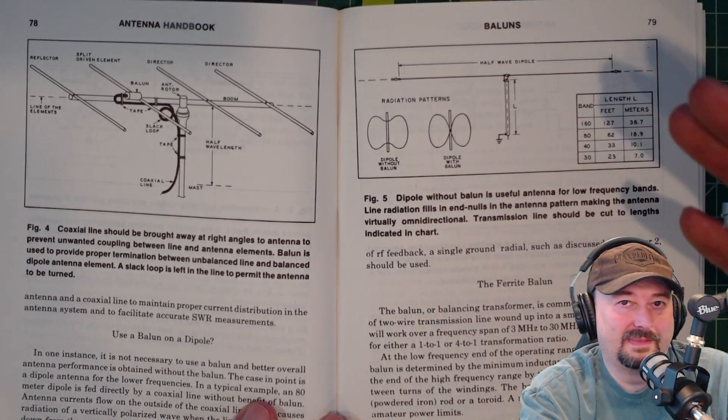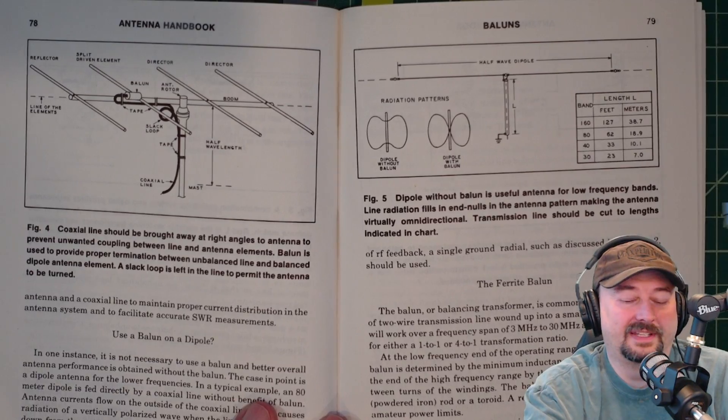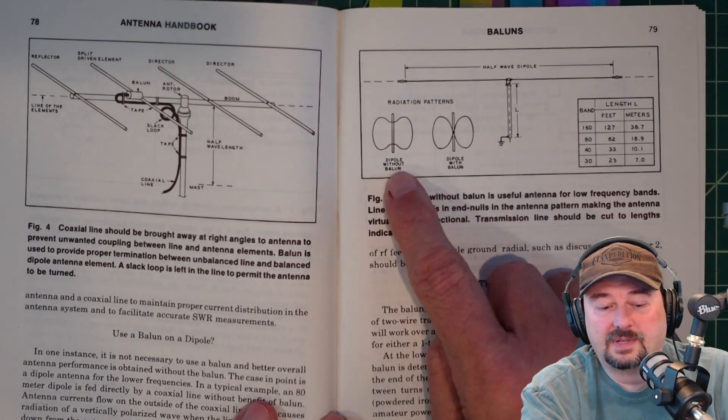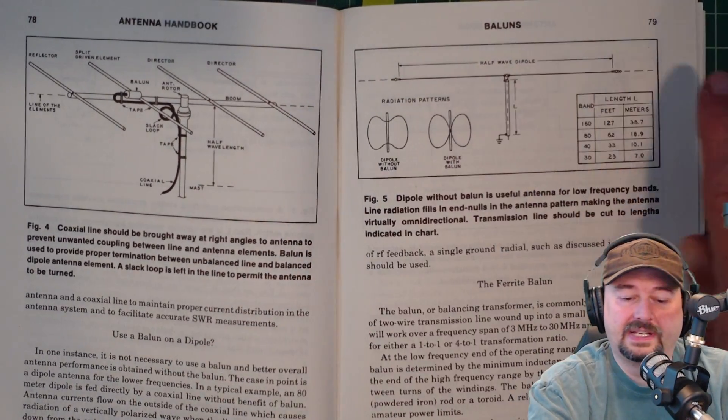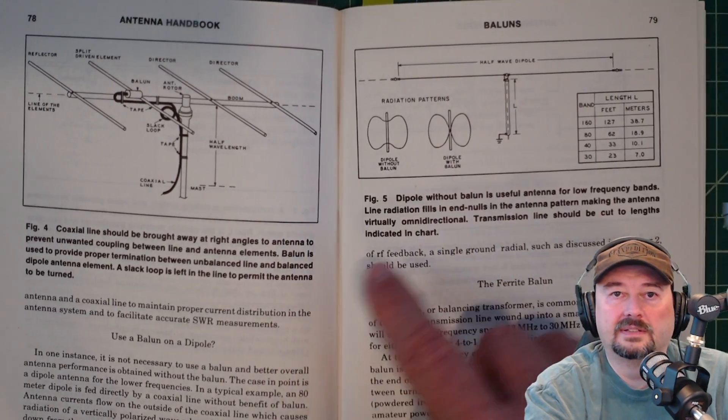I wouldn't do that. I'd just rotate my dipole, or I would set up a different antenna. But in the event that you do want to operate without a balun, I just found that to be a pretty educational and enlightening piece here in this book.